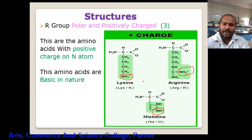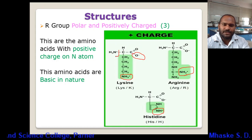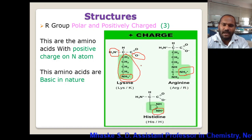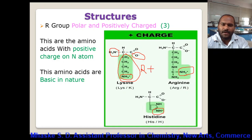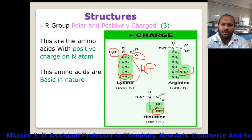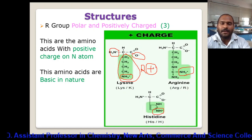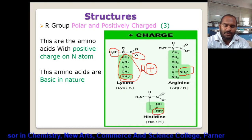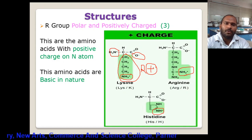In addition to the standard plus and minus charges on the amino and carboxyl groups of the amino acid backbone, there is an additional positive charge on the side chain R group. Therefore these three amino acids — lysine, arginine, and histidine — are considered positively charged and basic in nature. This is the third class of amino acids.